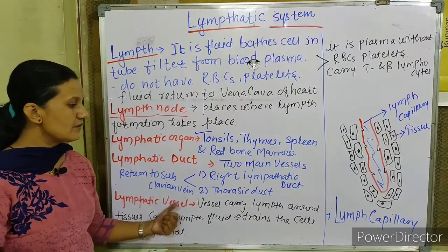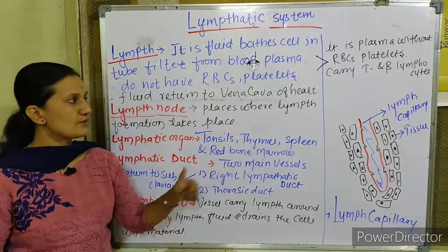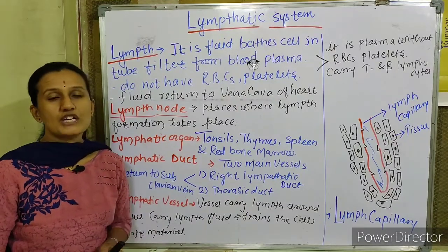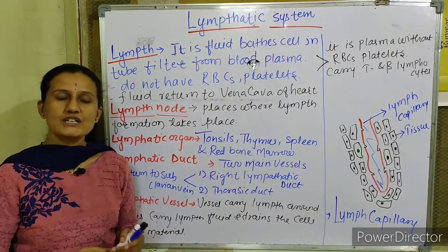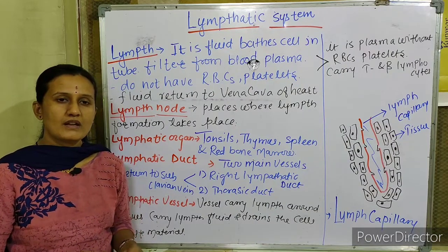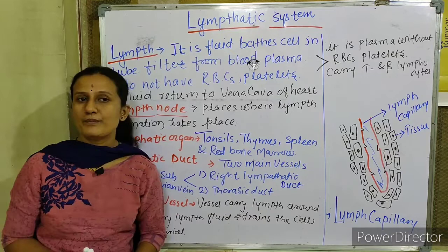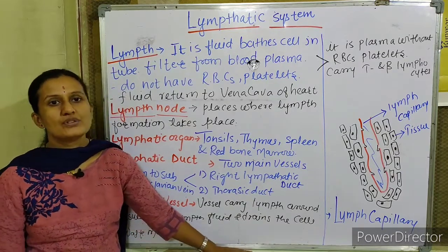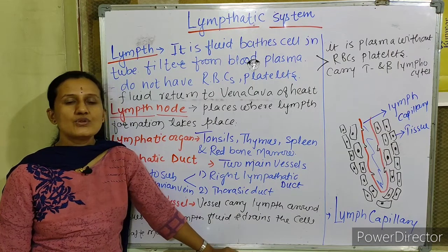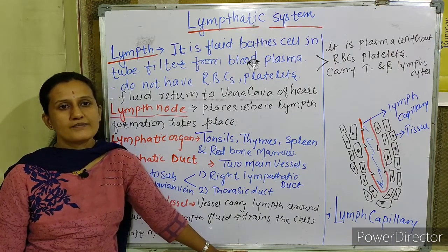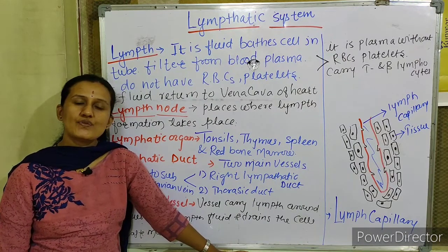The lymphatic vessels carry lymph fluid and drain cell waste material from the cells themselves. The functions of the lymphatic system include: carrying CO2 and waste material from the blood to the veins and main circulatory system, draining CO2 and waste material from cells, and engulfing bacteria from the tissue fluid.